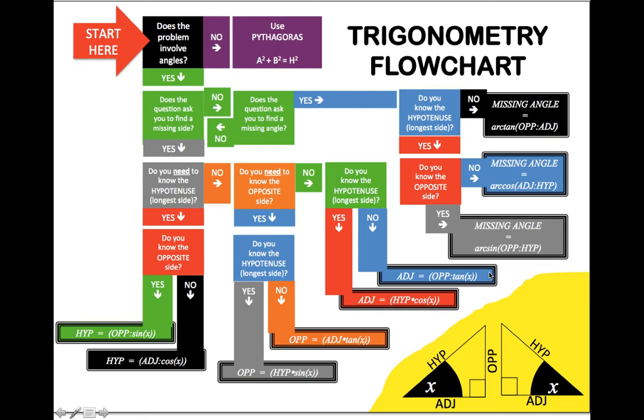So if you remember my trigonometry flowchart: does the problem involve angles? Yes, it does. We're trying to figure out the angle of the gradient. Does the question ask you to find a missing side? No, it doesn't because we're trying to figure out the angle. Does the question ask you to find a missing angle? Yes, it does. Do you know the hypotenuse? Yes, we do. Do you know the opposite side? Yes, we do.